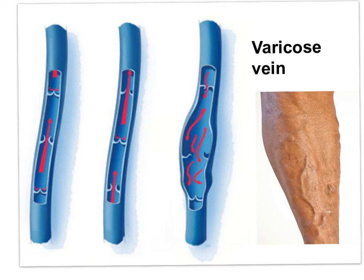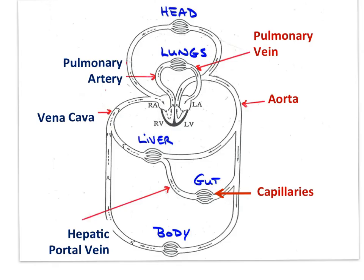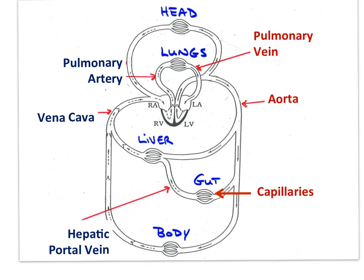You can see varicose veins here. In this image, we can see veins returning blood to the heart, and along the way we see valves to ensure that blood does not flow back, given the low pressure of blood in the veins. And that brings us to the end of IB Bio Human Physiology Part 6, Circulation D.